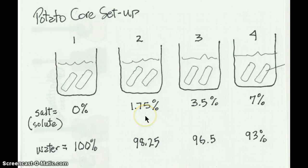In the second cup you've mixed up a 1.75% salt solution. That means that 1.75% of the molecules in this water are salt and 98.25% are water. The third cup has a 3.5% salt solution, which means that 96.5% of the molecules are water, 3.5% of them are salt. And in cup number four you've made up a 7% salt solution. 93% of the molecules in here are water.